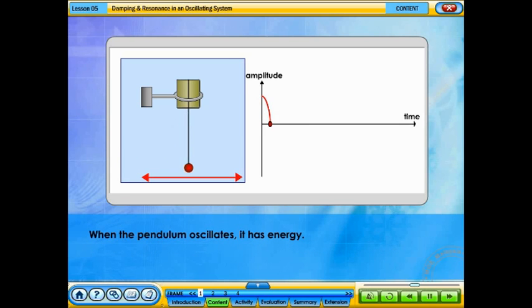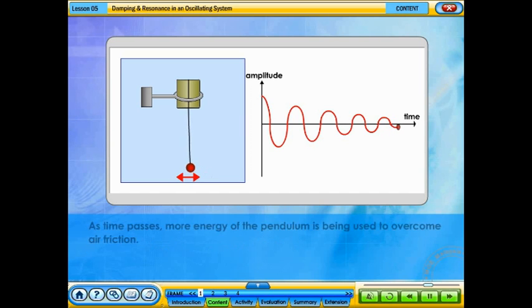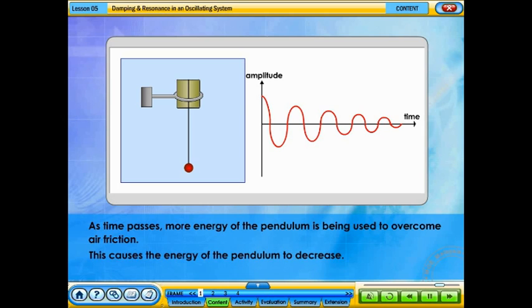When the pendulum oscillates, it has energy. This energy is used to overcome air friction. As time passes, more energy of the pendulum is being used to overcome air friction.